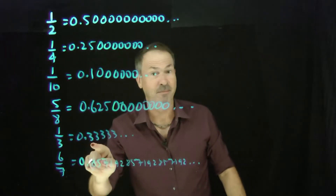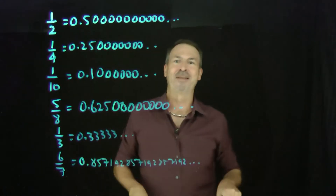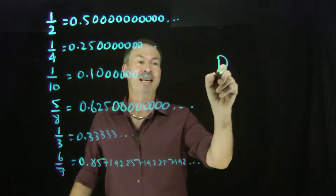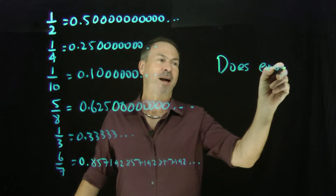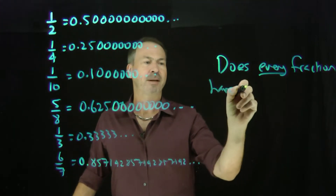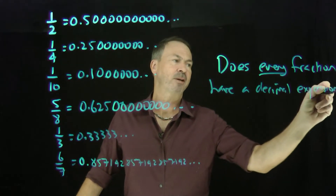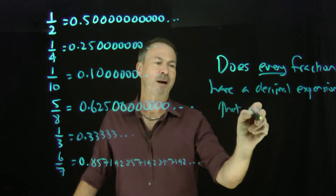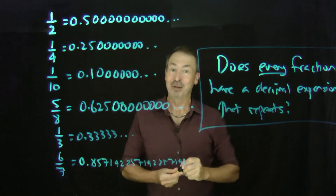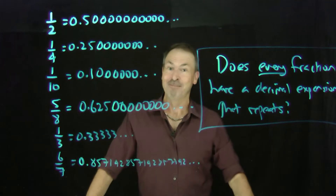A repeating pattern of zeros, a repeating pattern of just a single three, or a repeating pattern of those six digits. So this begs the big question: does every fraction have a decimal expansion that repeats? That's my natural next question, and it feels like a big question. Let me clean the board and give myself some space, and then let's actually work on it.